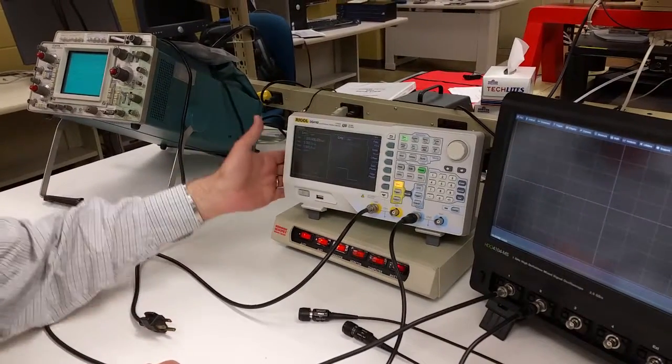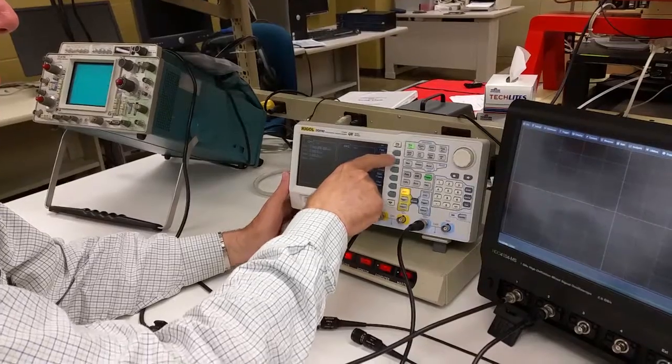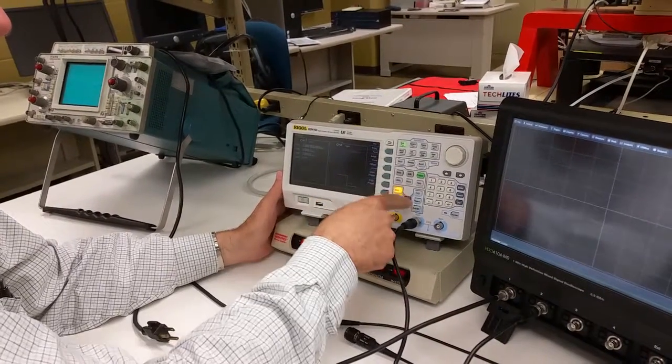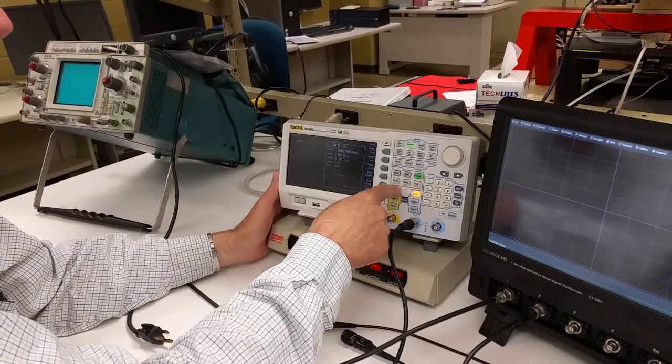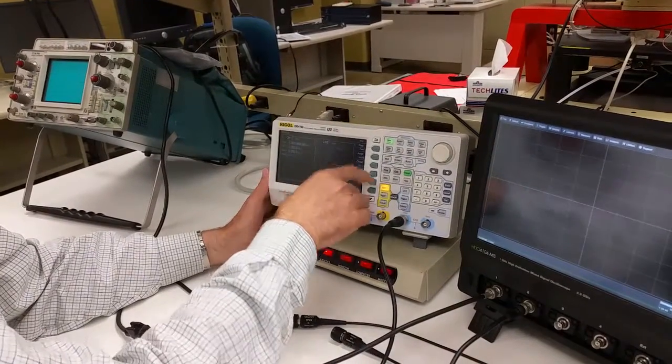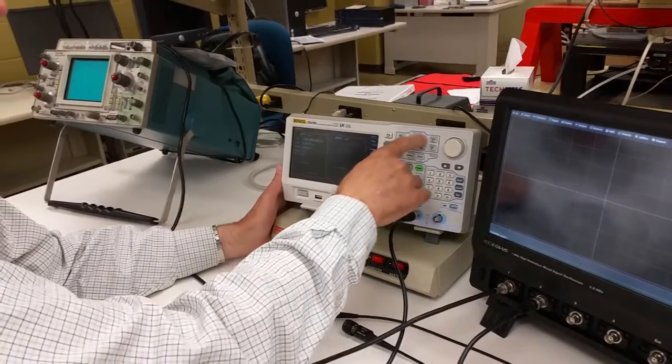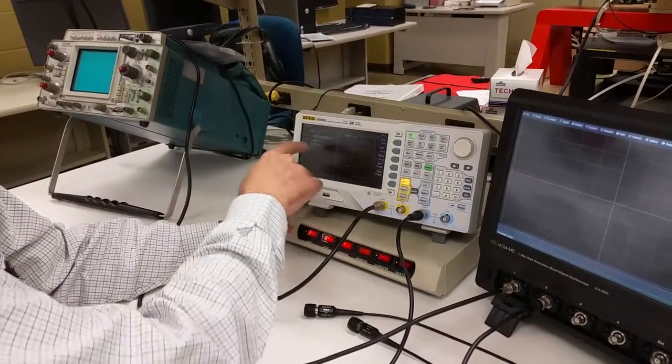So let's go back to the sine wave and look at the buttons along the side. These are programmable buttons. They have a different meaning depending on which functions you've selected. So for example, here, these buttons have a certain meaning. If I go to square wave or ramp, they change.